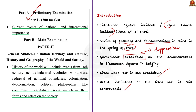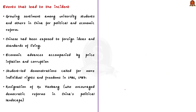By the spring of 1989, there was a growing sentiment among university students and others in China for political and economic reform. The country had experienced a decade of remarkable economic growth and liberalization, exposing many Chinese to foreign ideas and standards of living. Though there was economic progress, China was also experiencing price inflation during that period and corruption was running high in the government.